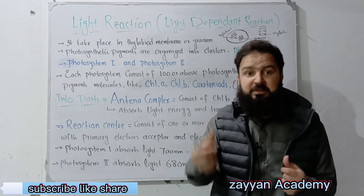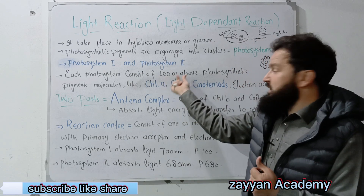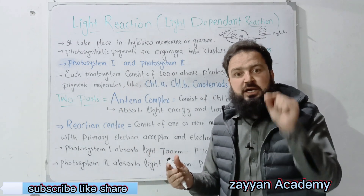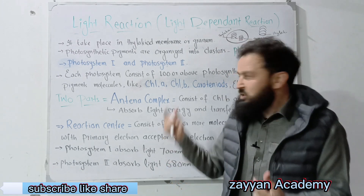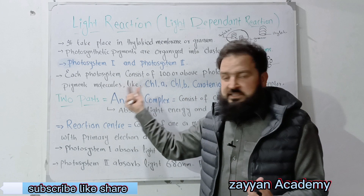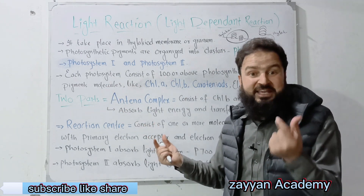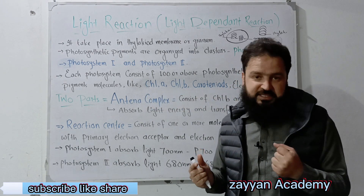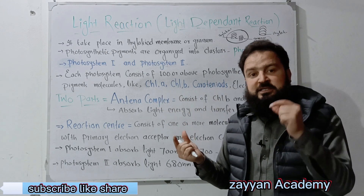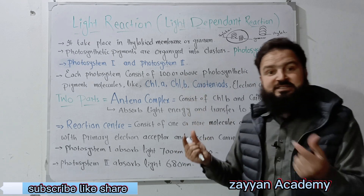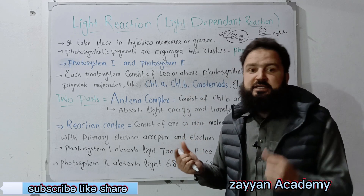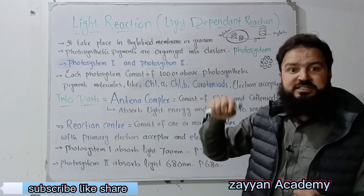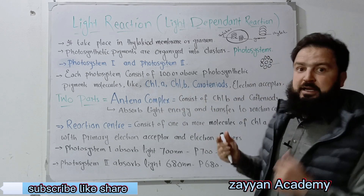Photosystem one — there are pumps in a cluster. Above the photosynthetic pigments there are pumps — more than 100 — along with chlorophyll A, chlorophyll B, carotenoids, and an electron acceptor.